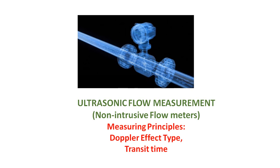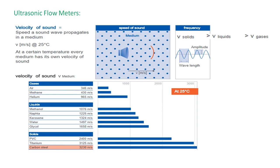The measuring principles that ultrasonic flow meters use are the Doppler effect type and transit time measurement for the measurement of flow rate. Ultrasonic flow meters use ultrasound, and the velocity of ultrasound depends upon the medium. The velocity of ultrasound is greater in solids compared to liquids and gases.